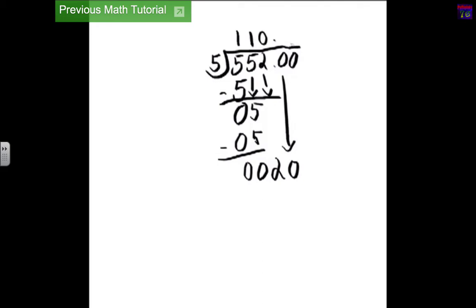5 can go into 20 4 times. 5 times 4 equals 20. And then you subtract. And this equals 0, 0, 0, and 0.